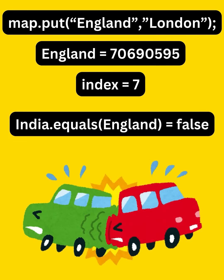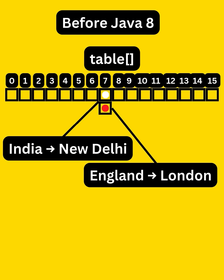Now to solve this, before Java 8, it used to start a linked list to store multiple entries in the same bucket. But that makes searching slow by order of n.